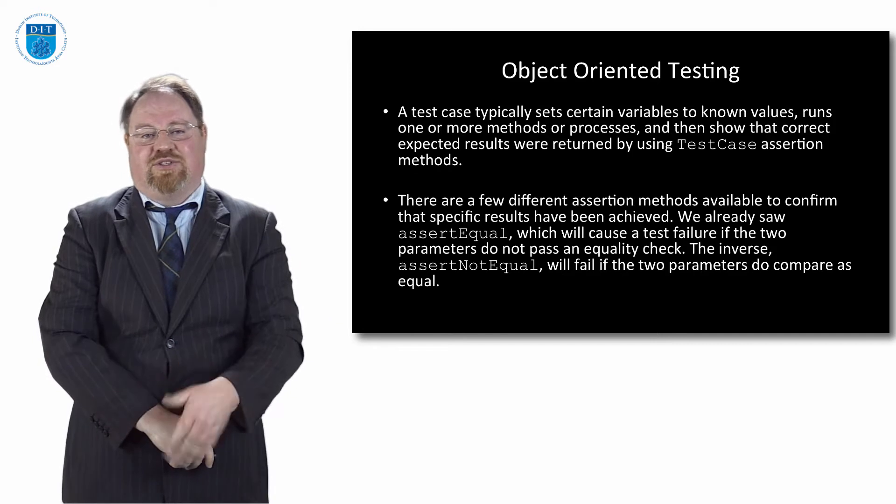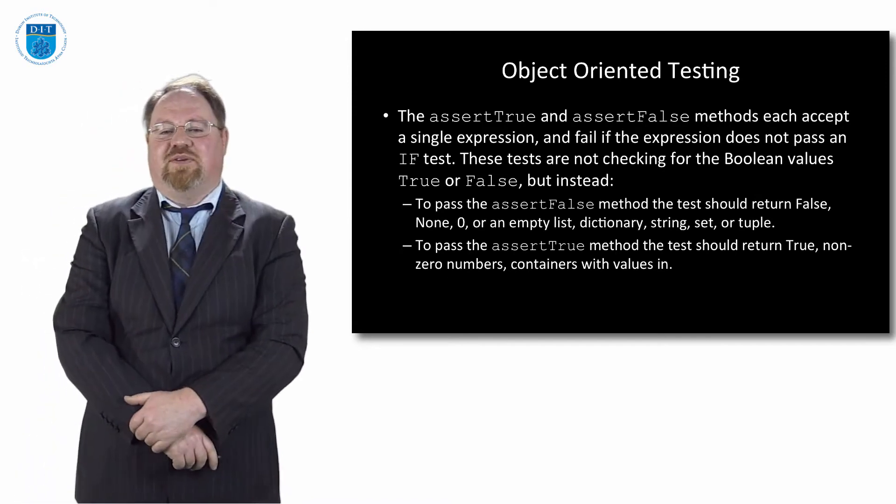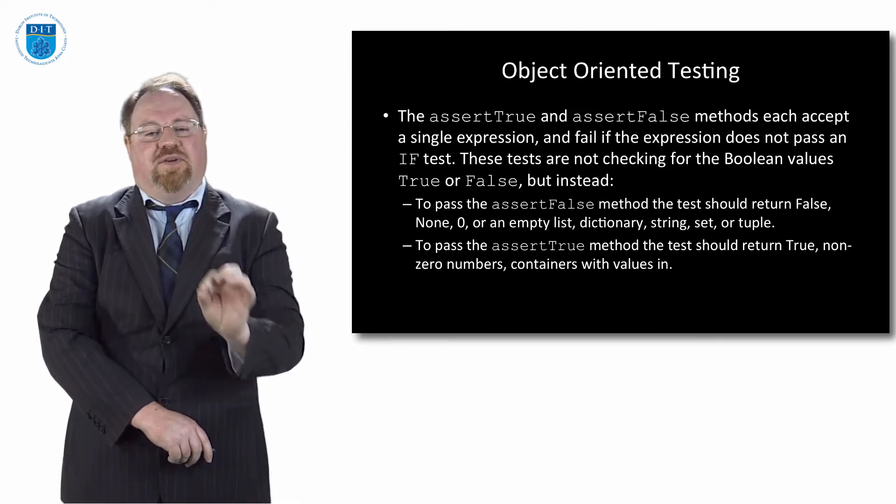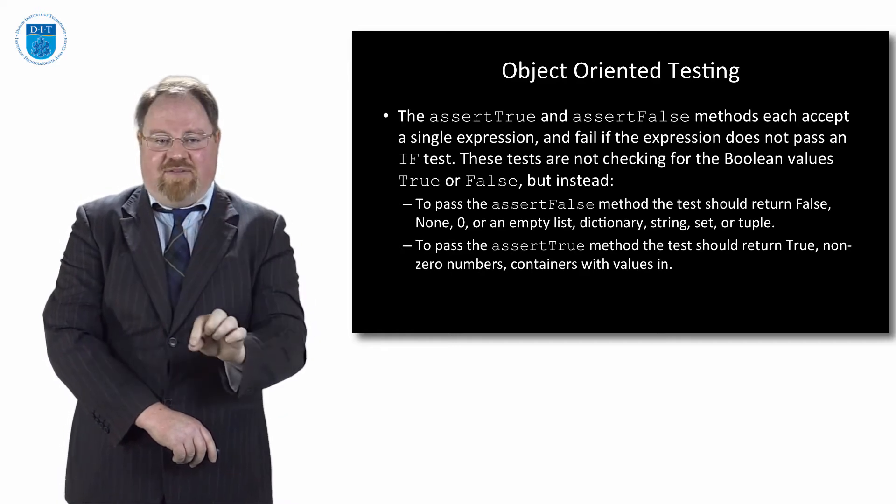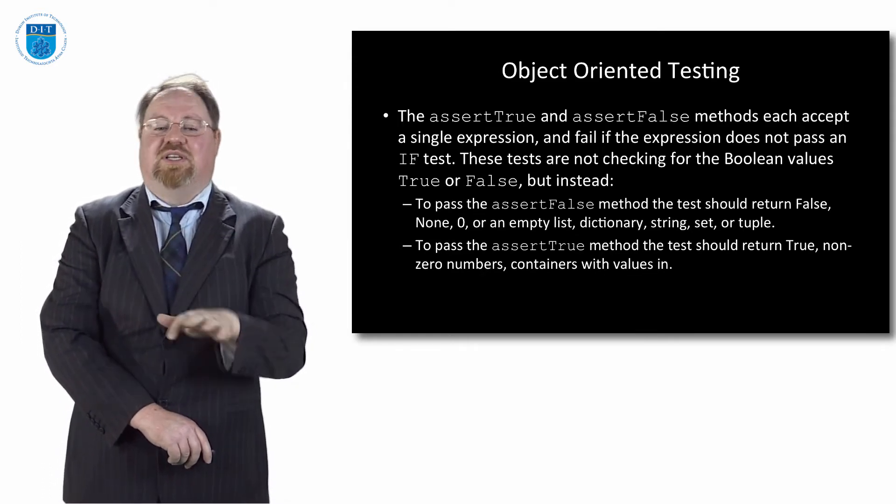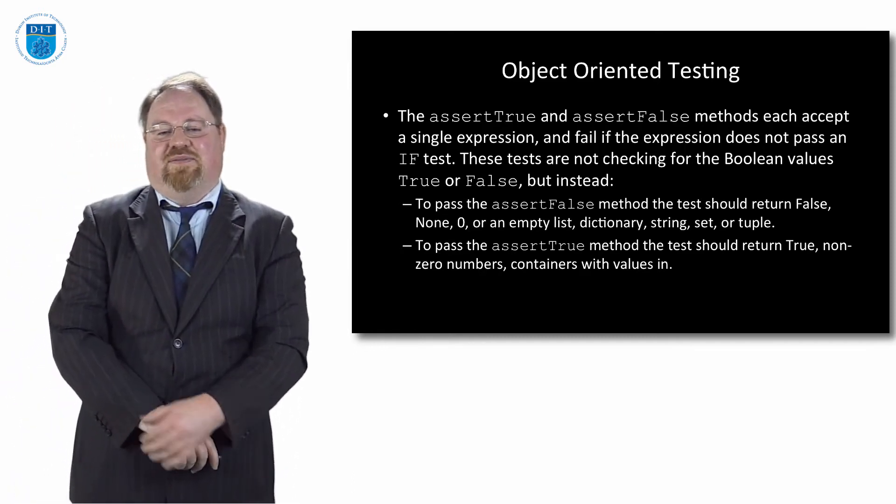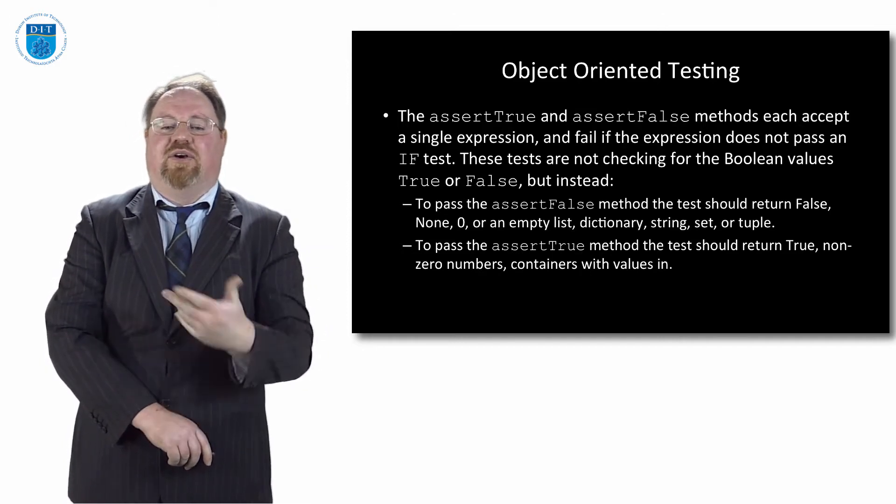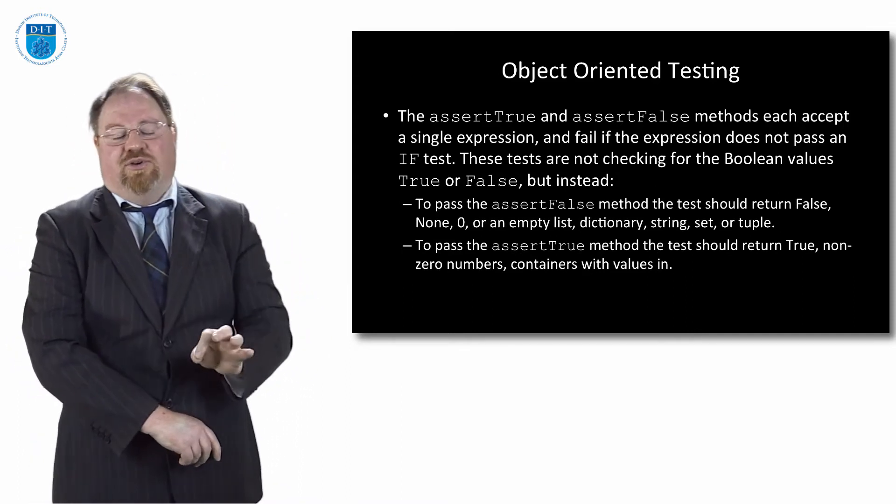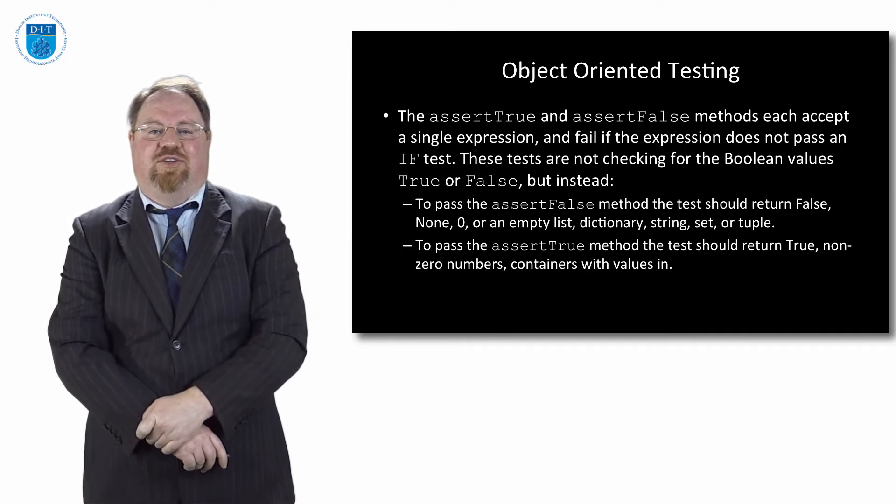We've two others, assertTrue and assertFalse. assertTrue doesn't mean it just returns a true. assertFalse for example means if I do this program it returns the boolean value false. It returns a blank value, a None, or returns a zero if it's numerical field, or if it's a container type that returns an empty list, dictionary, string, set or tuple. And assertTrue passes if I return a true value, a non-zero value, or a container which can be a list, dictionary, string, set or tuple with values in it.